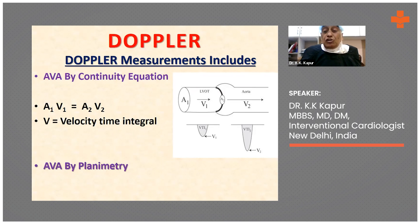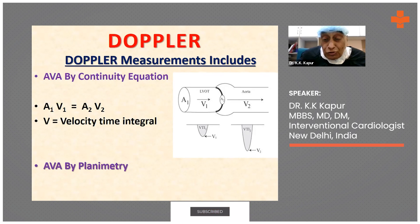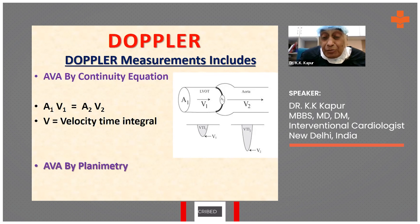The right parasternal view and the apical views are most commonly used, but occasionally you could use the subcostal view. After that, we measure the cardiac output. We take the LVOT diameter in mid-systole, and we also measure the VTI — the velocity time integral — across the aortic valve.